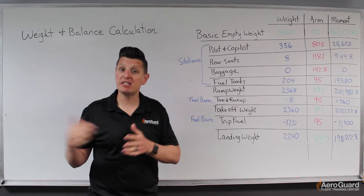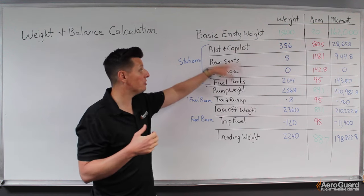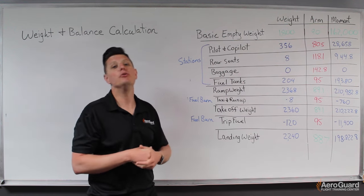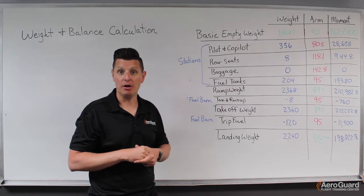If we found we were outside those tolerances in some way, we may need to make adjustments to where we've positioned things in the aircraft to ensure we stay within that operating envelope.